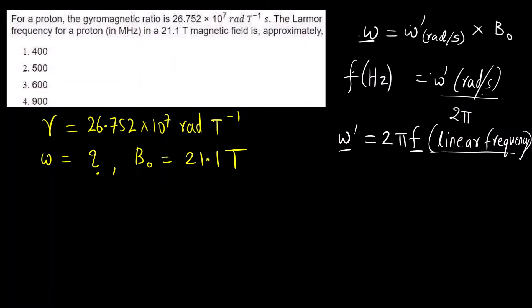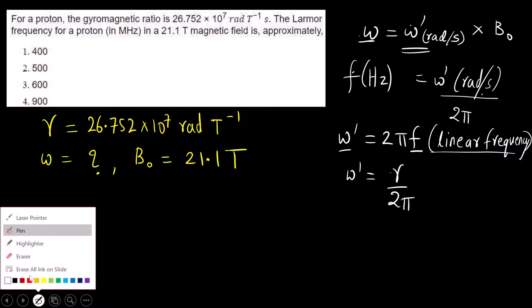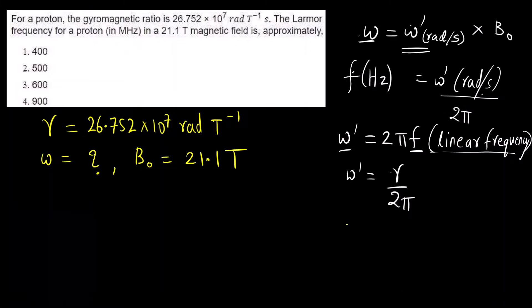This is the relation. This gamma dash we substitute by gamma by 2 pi. That is how we get the final formula that we see in most of the textbooks: Larmor frequency. Omega is Larmor frequency or precessional frequency of the proton.